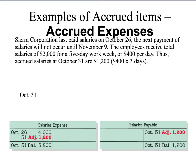The last two adjusting entries are accrued items: accrued expenses and accrued revenues. These are fairly straightforward and are best demonstrated with an example. Sierra Corporation last paid its salaries October 26th; the next payment will not be until November 9th. Our cutoff period is October 31st. Employees receive total salaries of $2,000 for a five-day work week, or $400 a day. By October 31st they have worked three days — they haven't been paid, but they are owed $1,200. This has accumulated but not been recorded.